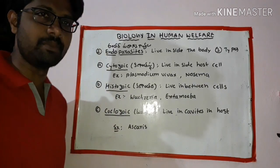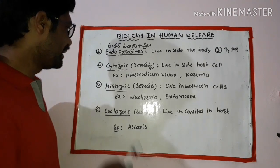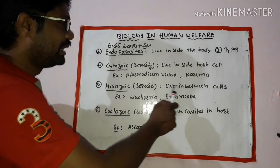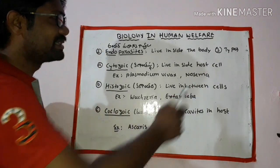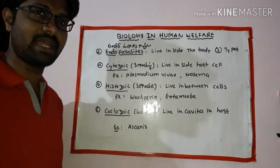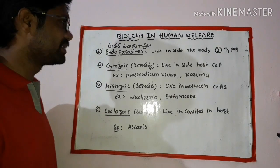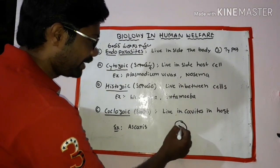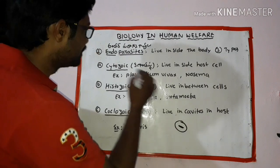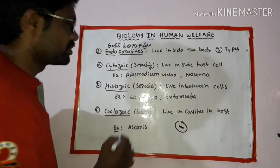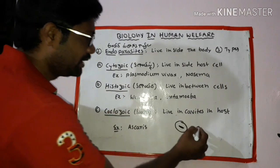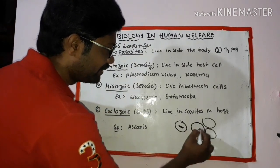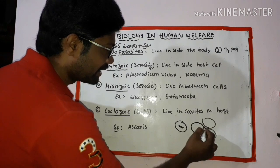Cytozoic parasites live inside the cell. Histozoic parasites live between the cells — in the intercellular spaces. For example, Plasmodium vivax is a cytozoic parasite that lives inside cells. Histozoic parasites occupy the gap between cells.